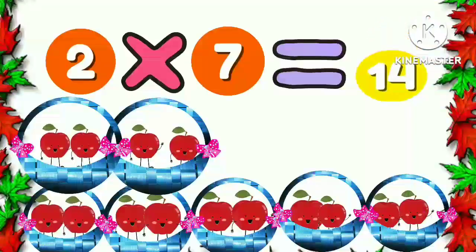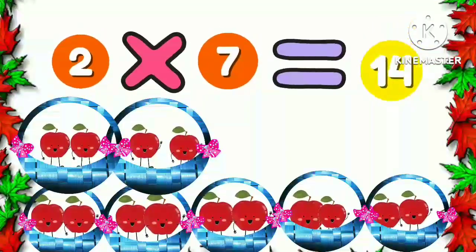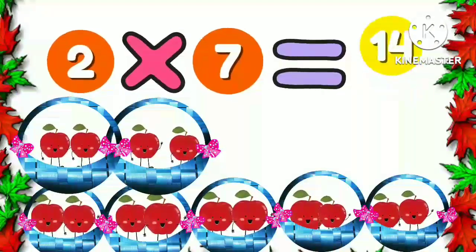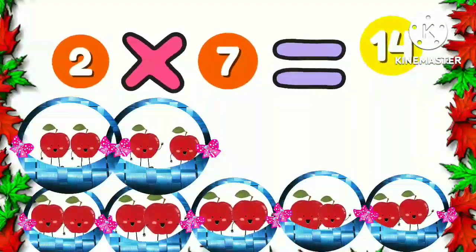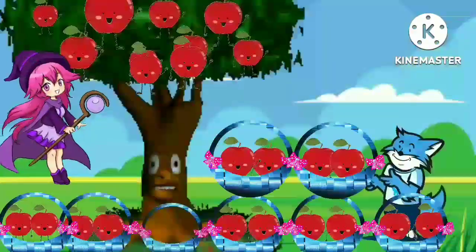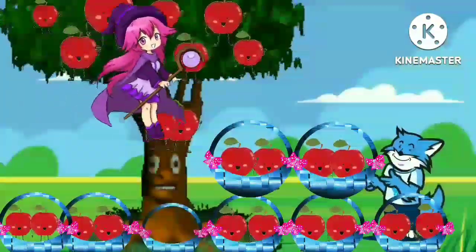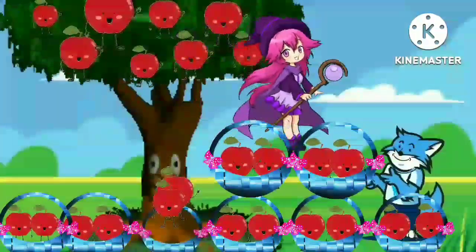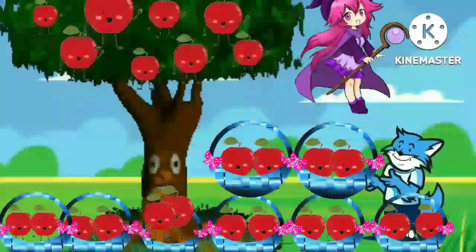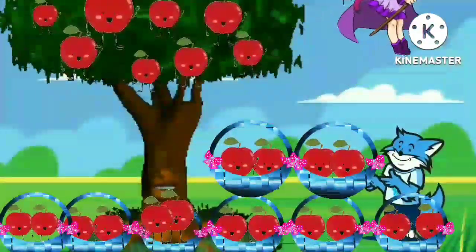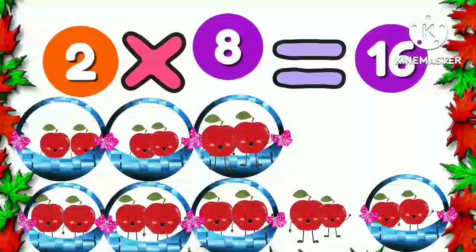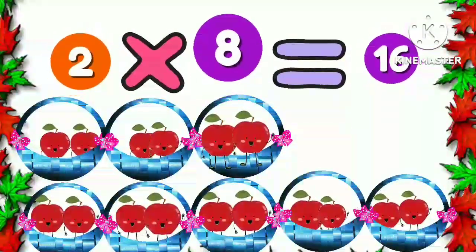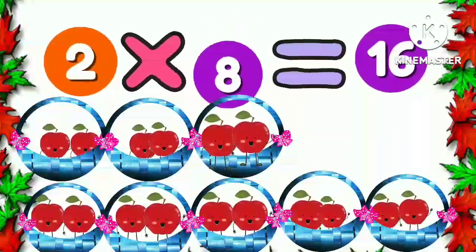Now a magician came again and cut off two more apples. The apples fell into the eighth basket. Now we have two apples in each eight baskets. Two eight times is sixteen.